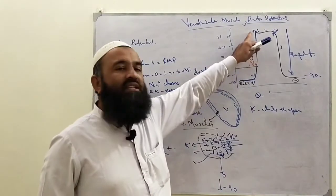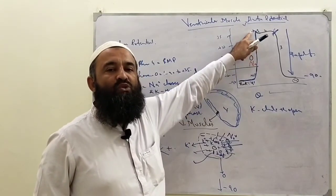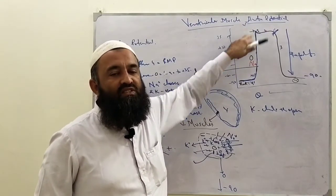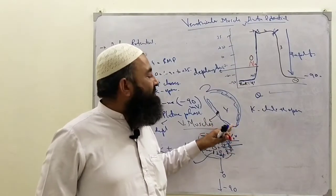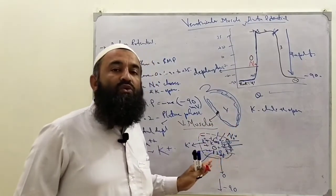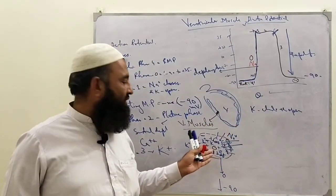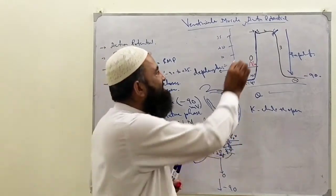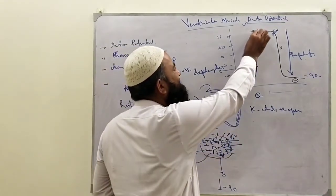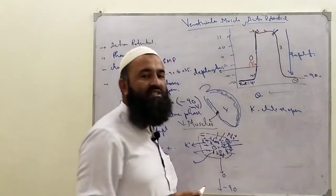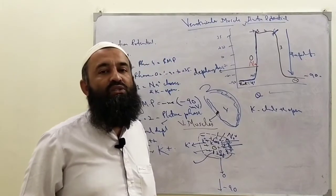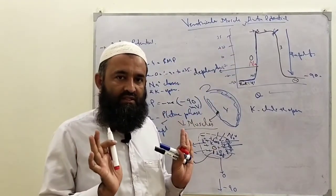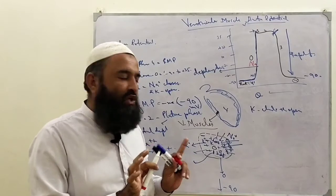To recap: after the sodium channel closes, the positive charges stop entering. When the potassium channel opens, positive charges start to leave, and the membrane begins moving in the negative direction. This starting point is called Phase 1.